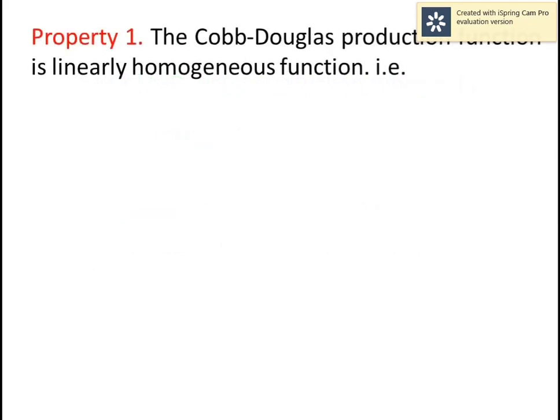Property 1: the Cobb-Douglas production function is a linearly homogeneous function. That is, lambda*q = a*(lambda*k)^alpha * (lambda*l)^(1 - alpha). By increasing the factors up to lambda times, the output increases up to lambda times. This is called the linearly homogeneous production function.